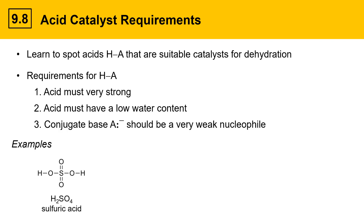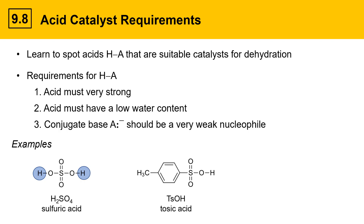One example is sulfuric acid, H2SO4. It has two acidic protons, is a powerful acid with very low water content, and is very effective at dehydrating alcohols to give alkenes. Another acid commonly used for dehydrations is tosic acid — para-toluenesulfonic acid — abbreviated TsOH, where Ts refers to everything except the OH. Its structure strongly resembles sulfuric acid, making it a very strong dehydrating acid. It is also somewhat soluble in organic solvents, which is one reason it's popular.